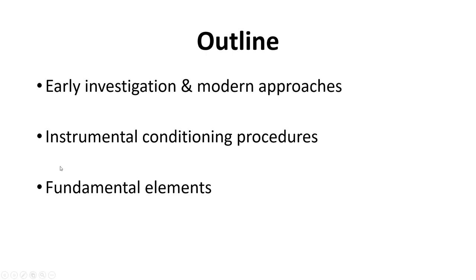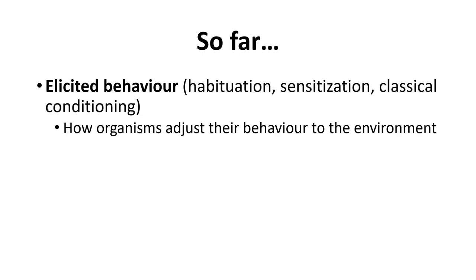We'll wrap up the procedures in the next video, then move on to fundamental elements. So far in the course, we've only really talked about elicited behavior — things like habituation, sensitization, or classical conditioning. These are behaviors that occur without really requiring the animal to make any kind of conscious response to obtain their unconditioned stimulus, usually food. Elicited behaviors are how organisms adjust to the environment without intentionally making that change; it happens automatically.